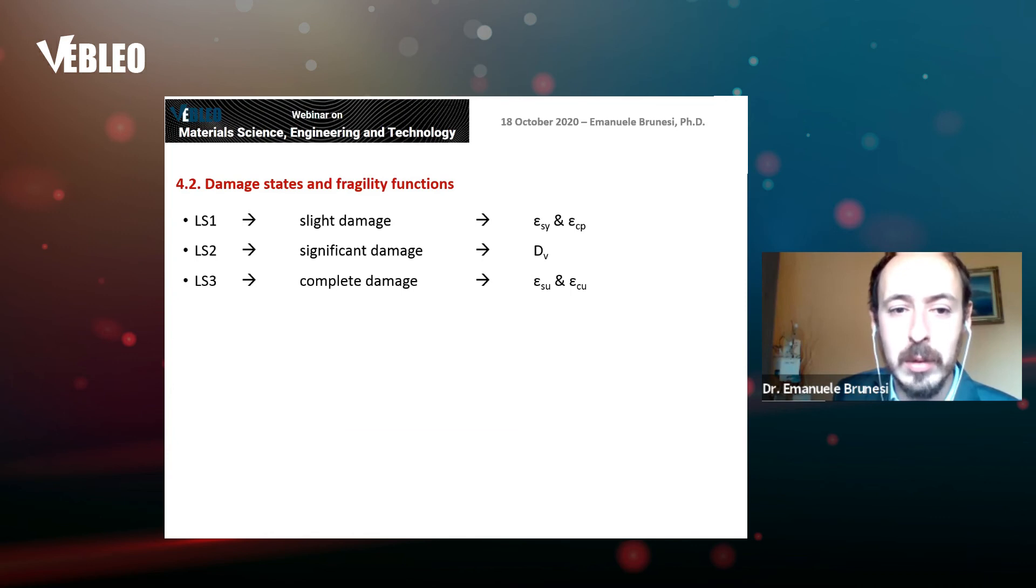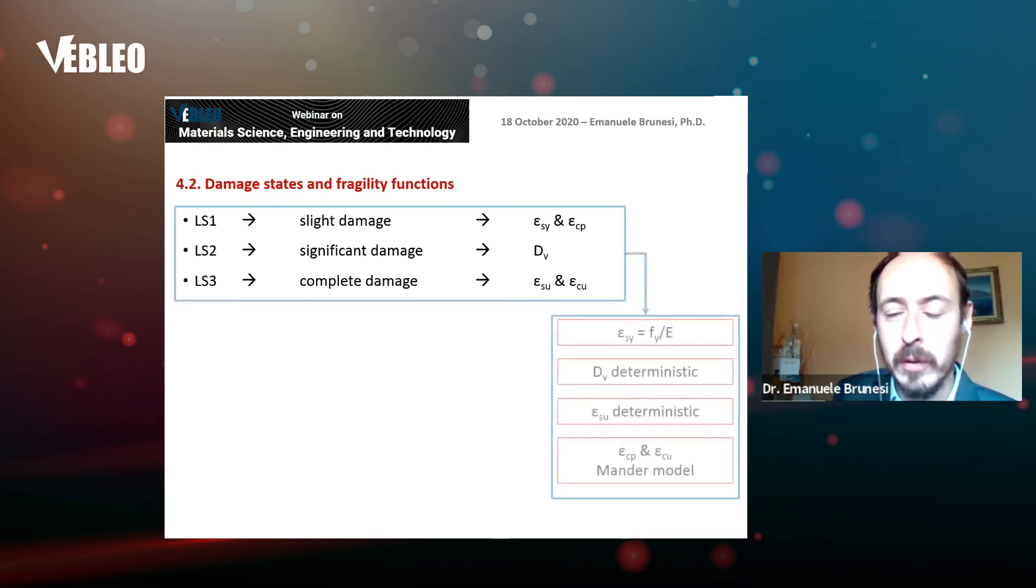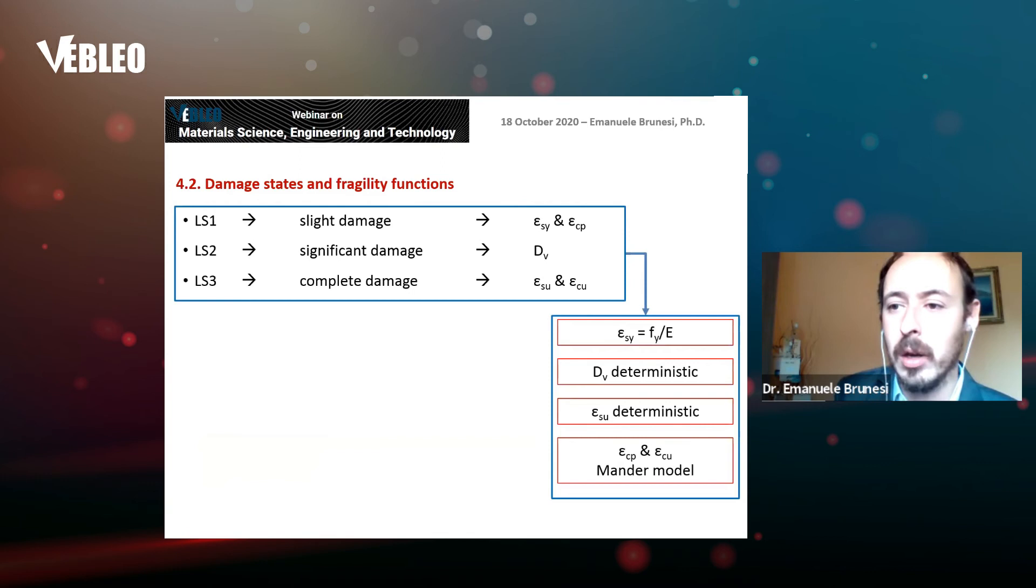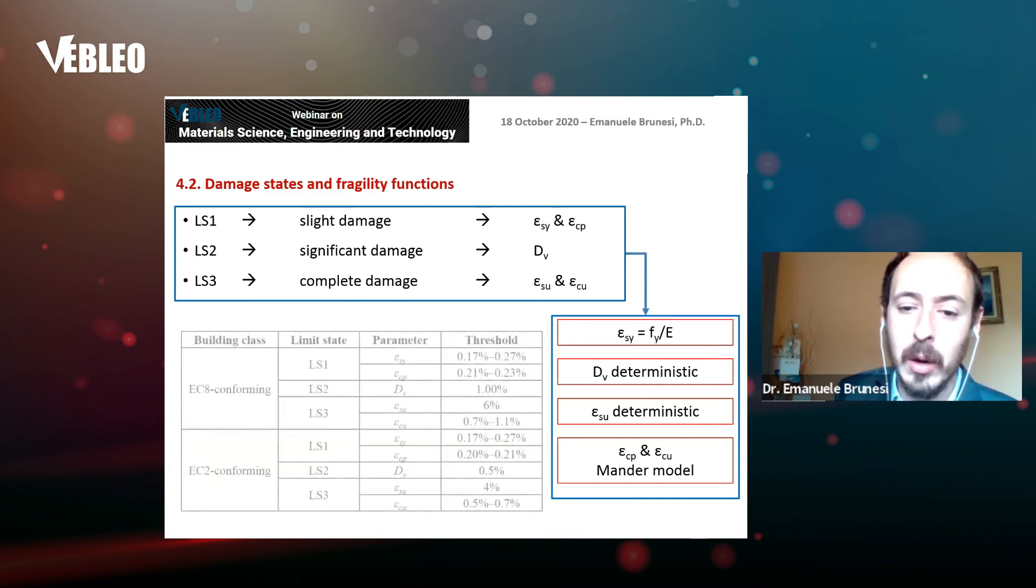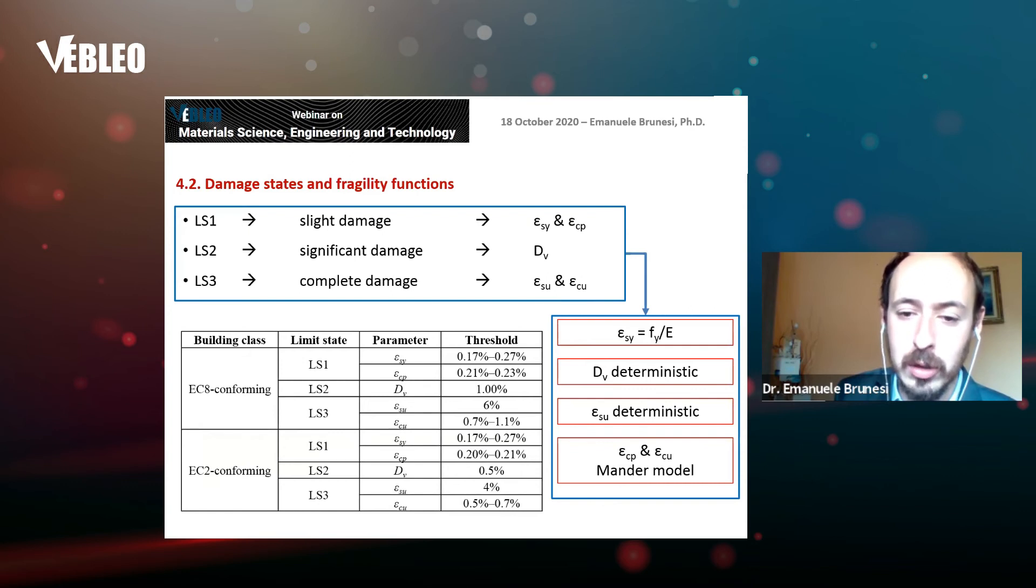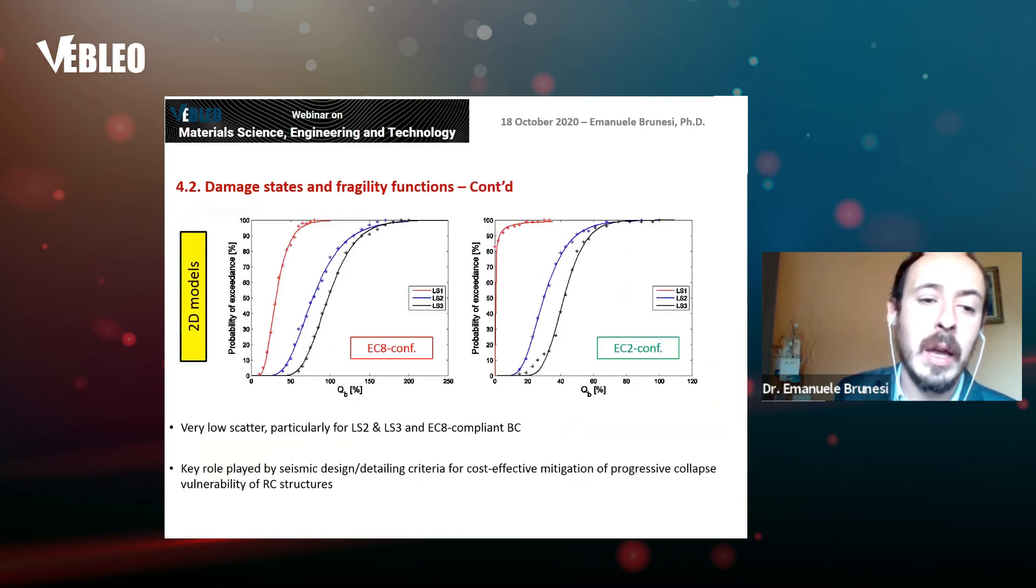Definition of damage limit states. We consider three different damage states: slight damage, significant damage, and complete damage. We evaluate them based on strain response parameters and beam drift. This table shows the threshold assumed for every parameter and damage limit state. Here are the fragility models obtained for EC2 and EC8 conforming building structures for 2D structural models. You can see very low scatter, particularly for significant and complete damage states and particularly for EC8 compliant building class.